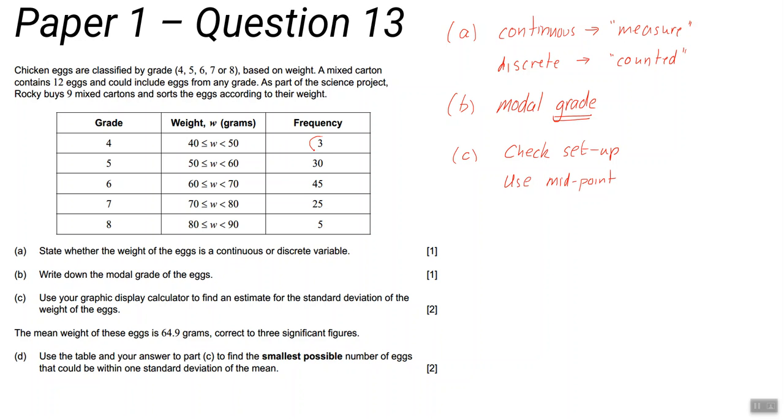You don't know these three eggs' weights - you know they're between 40 and 50. The safest guess is 45 because it's in the middle. That's the one with the least chance of being a long way out; it's the most reliable guess. So use the mid-points: 45, 55, 65, and so on.